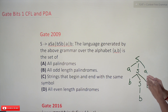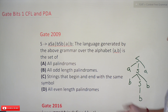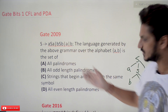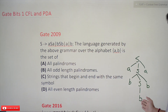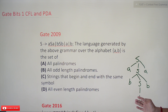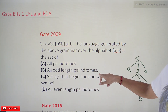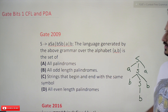Whenever there is an 'a' it is going to check 'a', if it is 'b' it is going to check 'b'. This is a palindrome. But here we don't have epsilon, so we have to stop using 'a' or 'b'. This means we can only generate odd-length palindromes. Even-length palindromes are not possible because we don't have epsilon. So all odd-length palindromes are possible using this given context-free grammar.